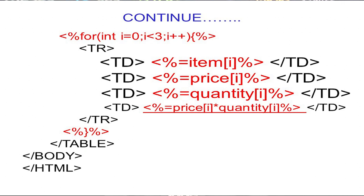After the row is closed, the for loop's curly bracket closes and the loop increments i to 1. On the second iteration, i=1, so it retrieves item[1] = 'CD', price[1] = 12.99, and quantity[1] = 9. The fourth cell multiplies price[1] × quantity[1], giving 12.99 × 9 as the total amount displayed.